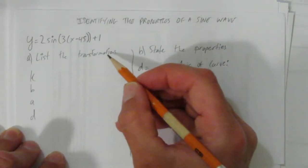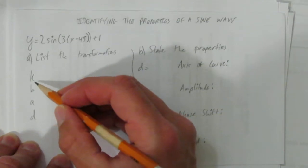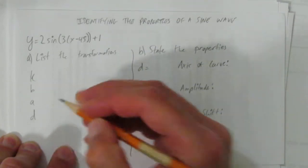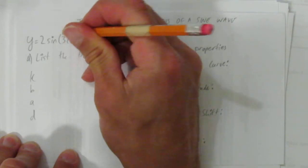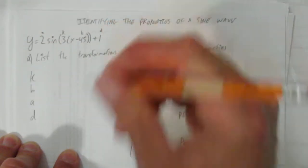So starting with list of transformations. First note, I believe this should be an order. And the order is what I call k-bad. It's this k value, then the b value, then the a value, then the d value.